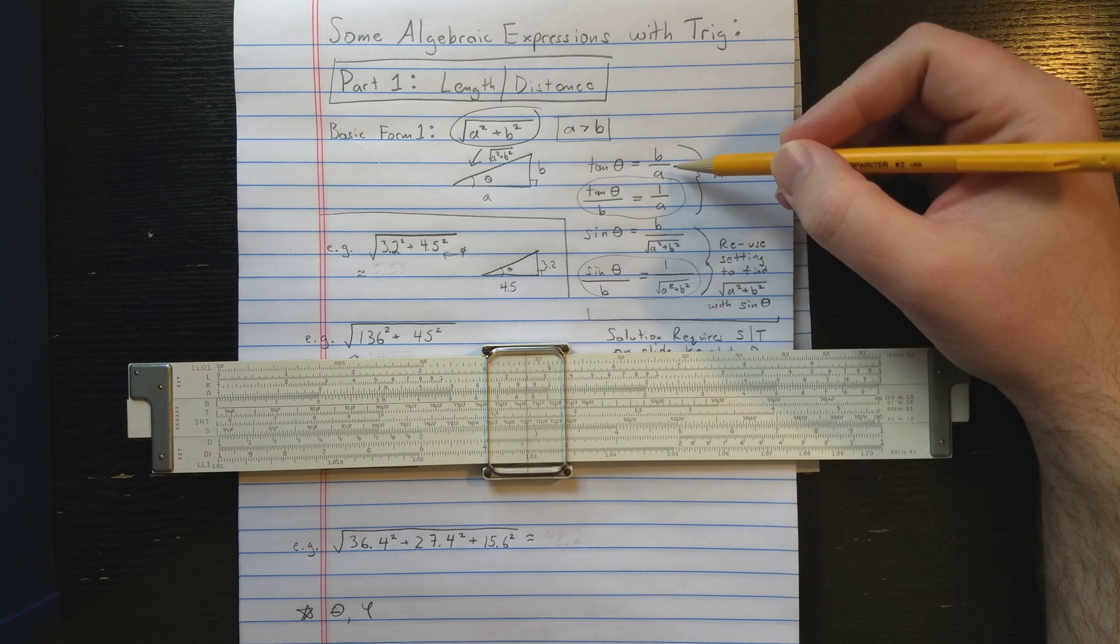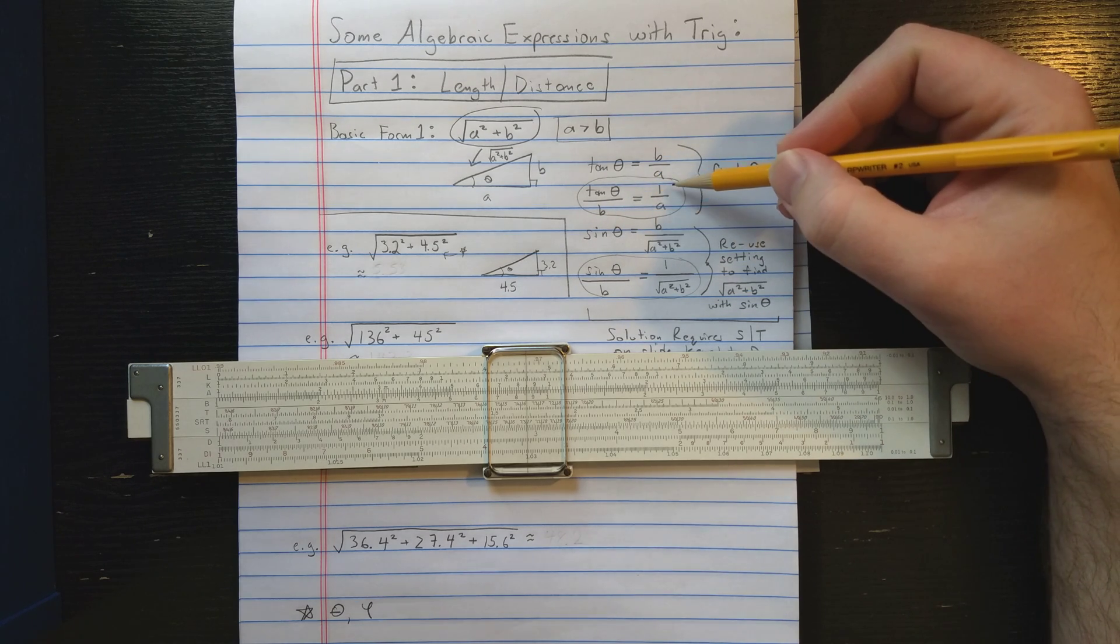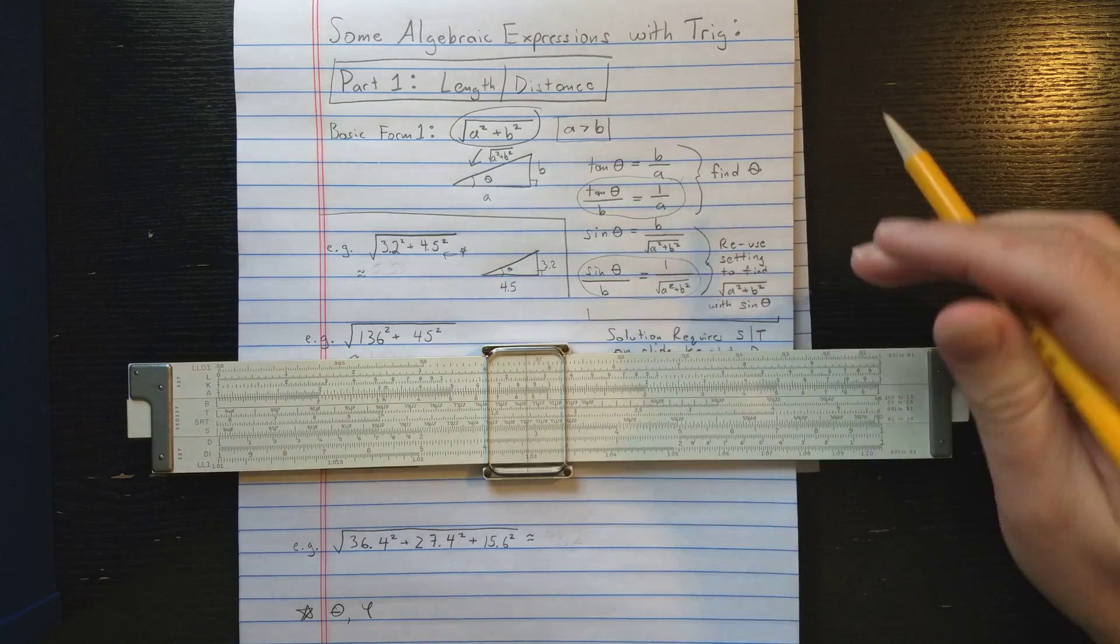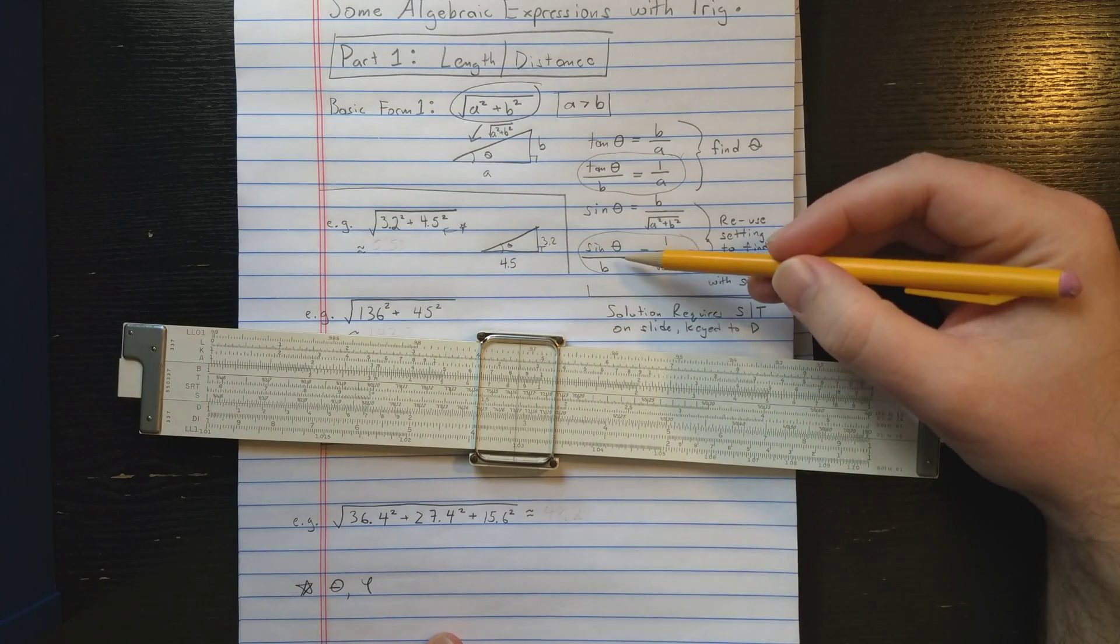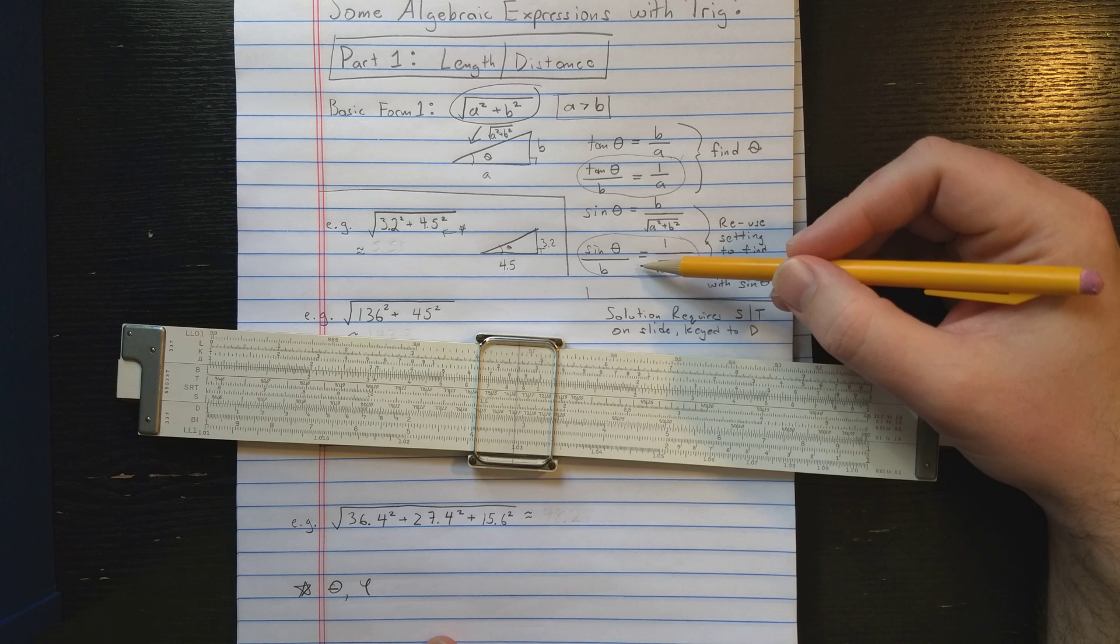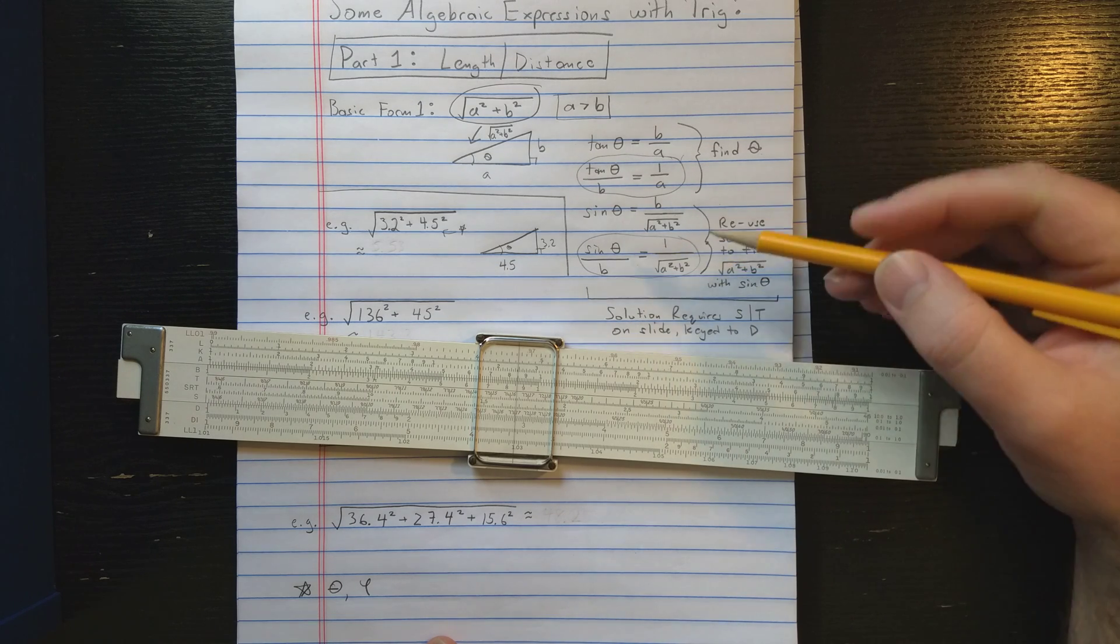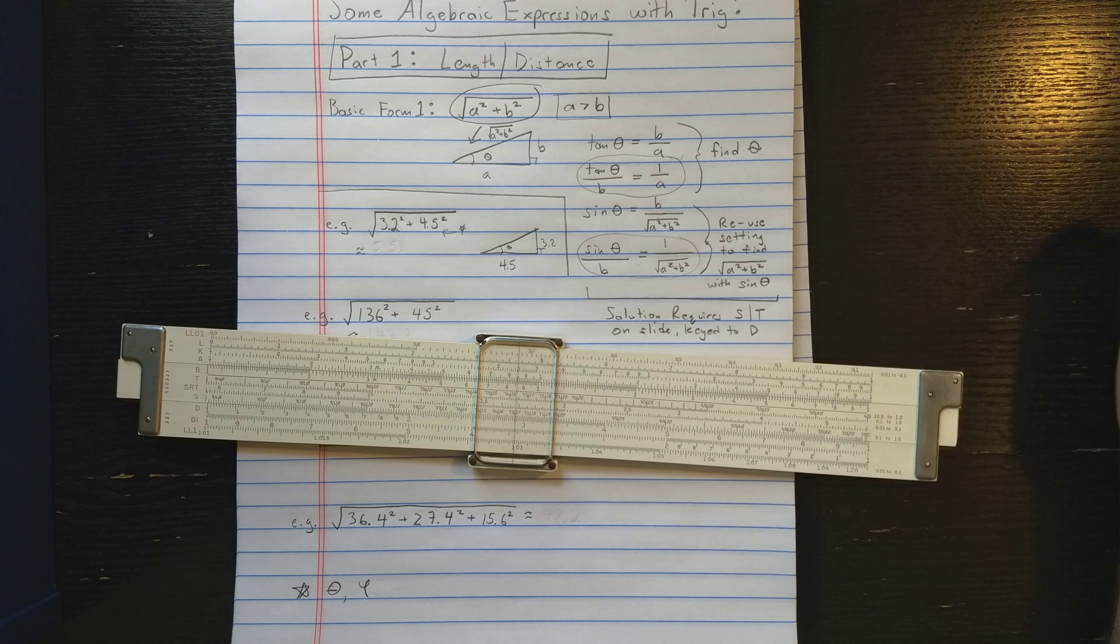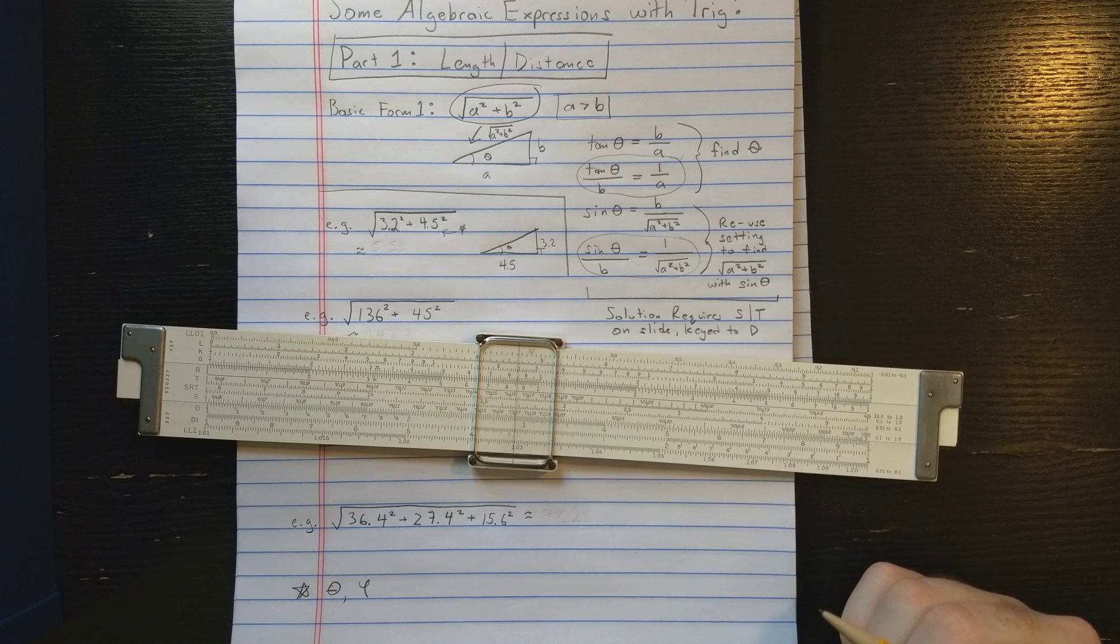First, tangent theta should be b over a. So tangent theta over b should be one over a. This is the setting I'll use in the slide rule, and I'll find the angle theta. Then I'll use standard law of sine setting for sine theta to find square root of a squared plus b squared. This is the standard setting you would use where you've got the index of your s scale over the hypotenuse.